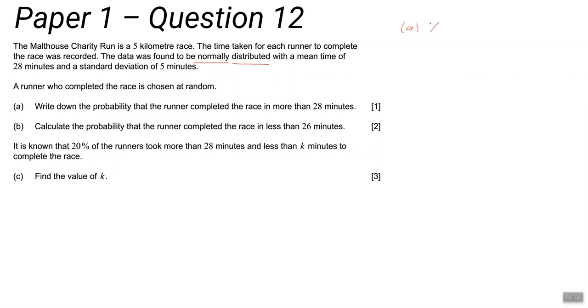Call your variable X for want of any better letter. The squiggly line means distributed. It's a normal distribution, so we write an N, and then in here we write the mean and the variance - that's the standard deviation squared. So X is distributed normally. The mean it tells you is 28, and the standard deviation is 5, so we can write that as 5 squared. That's the first part of your working.